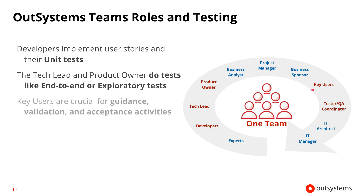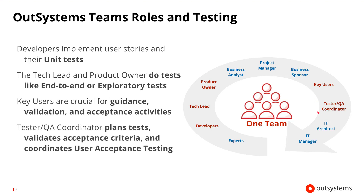The key users are important because they provide guidance and user story confirmation. They validate the iteration results and do the actual user acceptance testing. The tester and QA coordinator plan the tests, validate the results against the acceptance criteria, and coordinate the actual user acceptance testing.